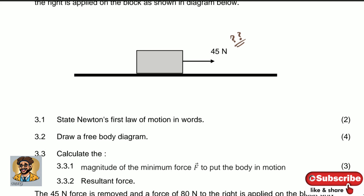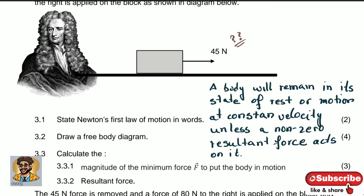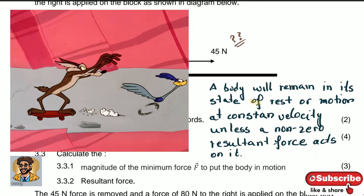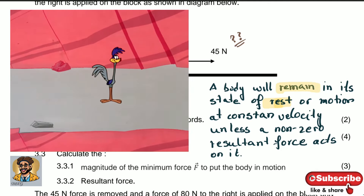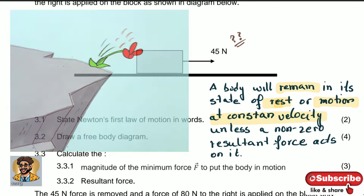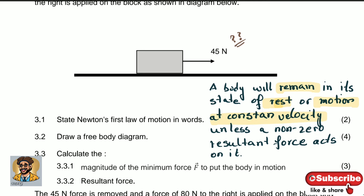Question 3.1: state Newton's first law of motion. It states that a body will remain in a state of rest or motion at constant velocity — meaning straight line at the same speed — unless a non-zero resultant force acts on the object. You'll get a mark for this definition, and it has a high probability of appearing in exams.